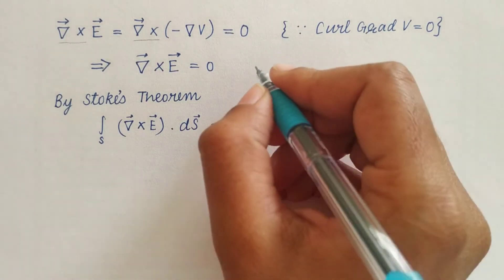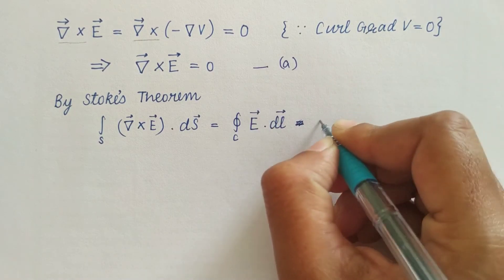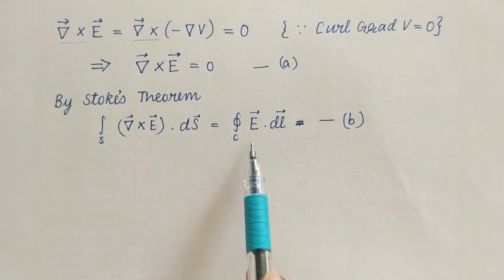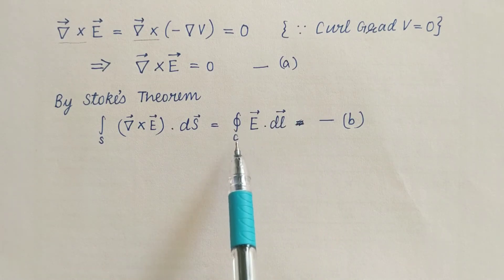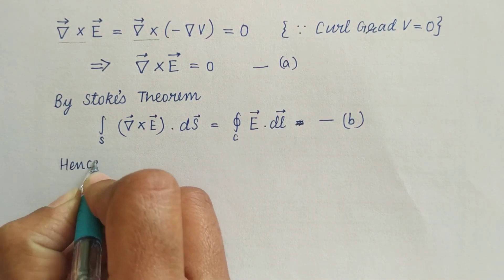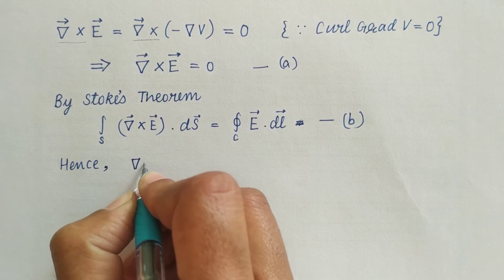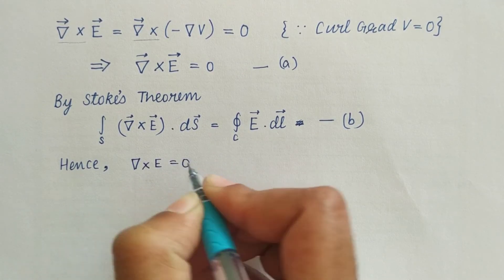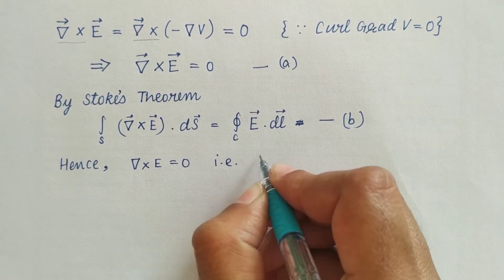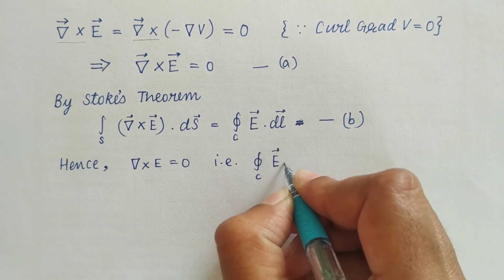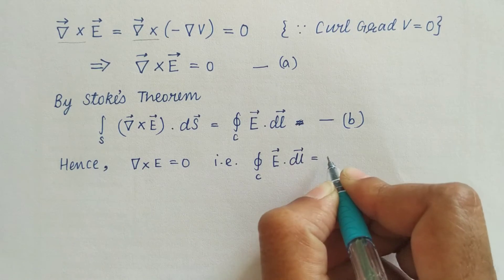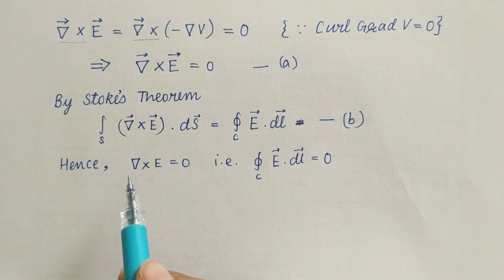From these equation A and B we can say that E dot DL would vanish over any closed path.